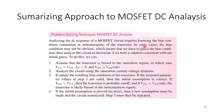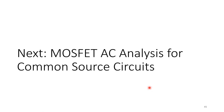Summarizing the approach to MOSFET DC analysis: when the bias is not clear, assume saturation, do the necessary calculations, then check the assumption. If the assumption is not correct, make another assumption and check again to verify. We're done for this session. The next video will be MOSFET AC analysis for common source circuits. Thank you. Assalamualaikum.